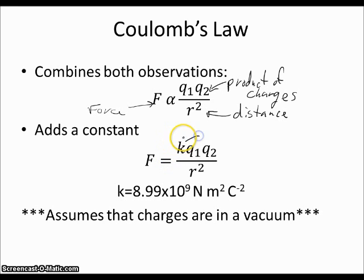And then in order to make it an equality, what Coulomb did was he added this constant which is known as Coulomb's constant, which is equal to 8.99 times 10 to the ninth newton meters squared per Coulomb squared. And this is a great law, but unfortunately it assumes that all charges are in a vacuum.